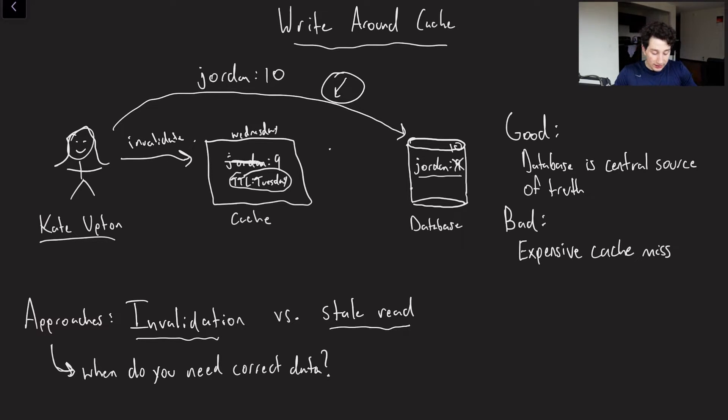And what this does is now the cache is going to either say, okay, well, it's empty now. So the next time she reads, the cache is going to say, I don't have Jordan, ask the database for it, the database comes back with the value, the cache populates itself with the new value for Jordan, and then returns it to Kate Upton, with Jordan is 10.